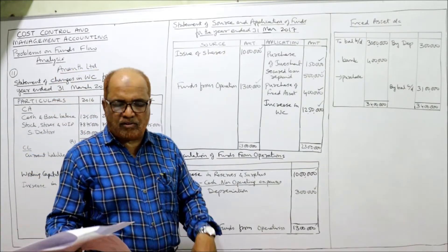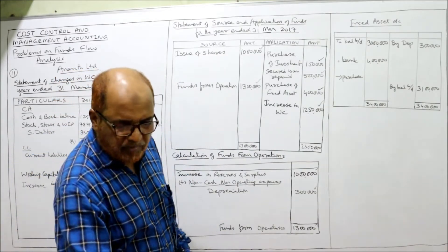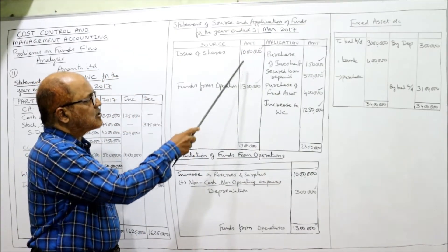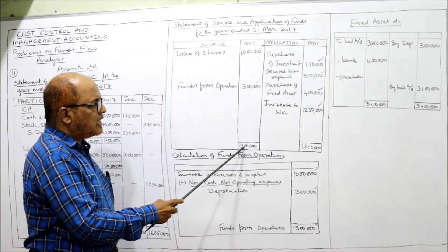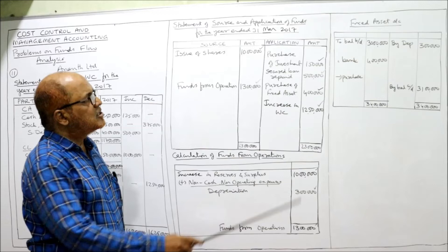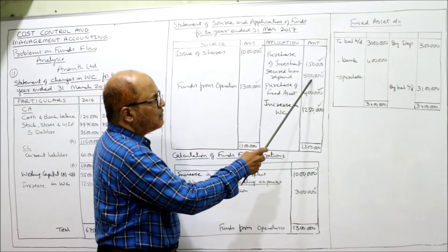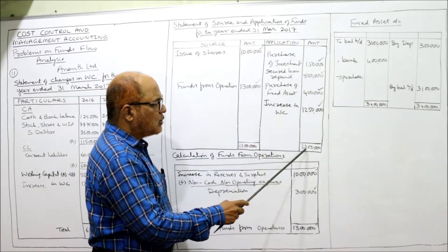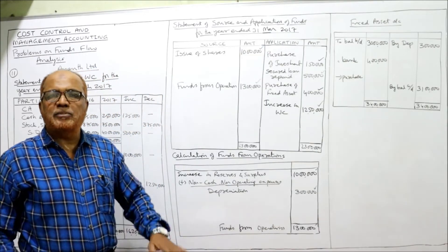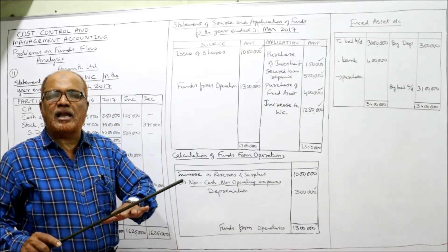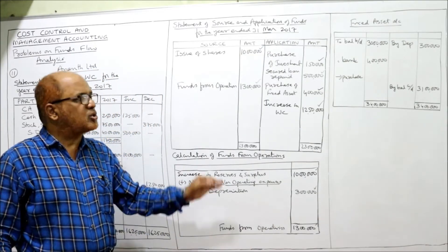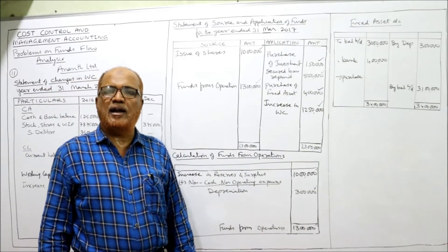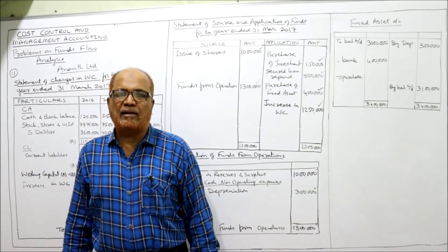All items from the problem have been taken. The total on the source side is 23 lakh: 1,50,000; 5 lakh; 4 lakh; 12,50,000 — total 23 lakh. Both source and application totals are equal at 23 lakh, meaning our solution is correct. This is the end of problem number 11.